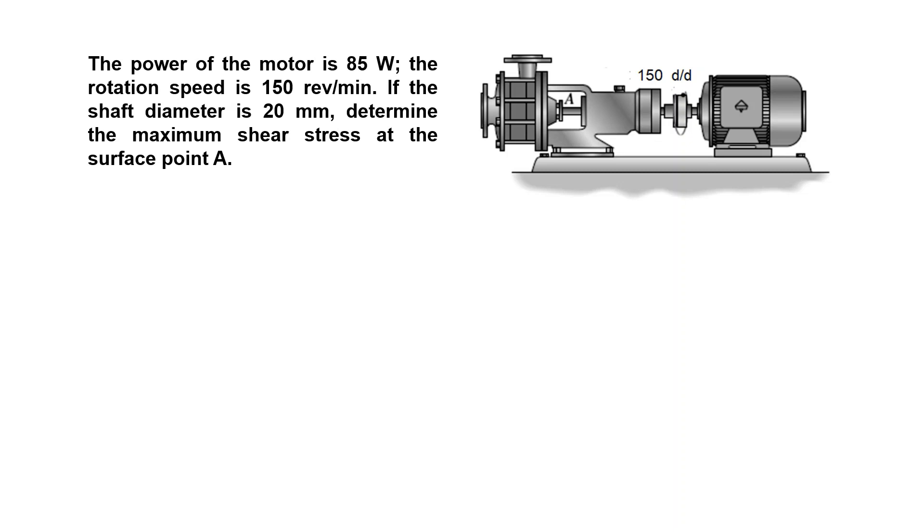Last question: a power transmission motor is 85 watts and the rotation speed is 150 rpm. The diameter is given, and determine the maximum shear stress at the surface point A over here. So 150 rpm, as we know, divide by 60, multiplied with 2 pi, and you will get your omega in radians per second. This is what we have done: this is 5 pi radians per second. This is my power.